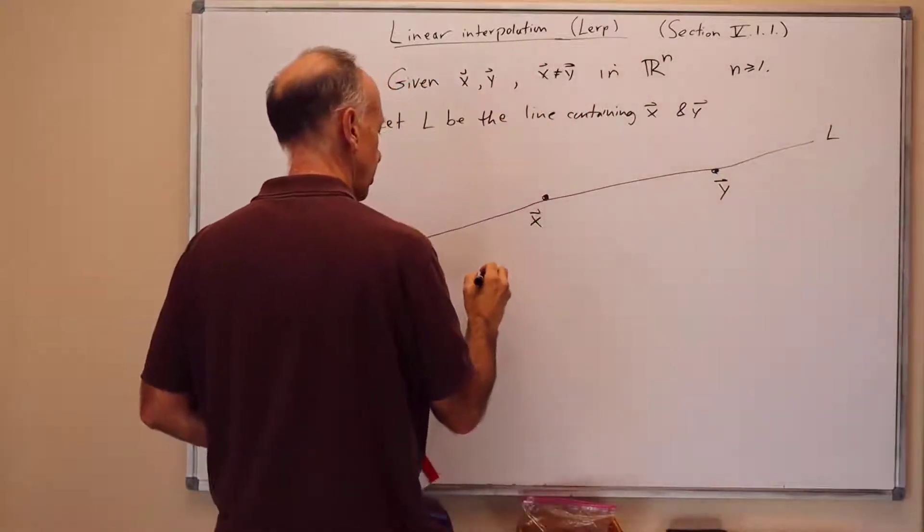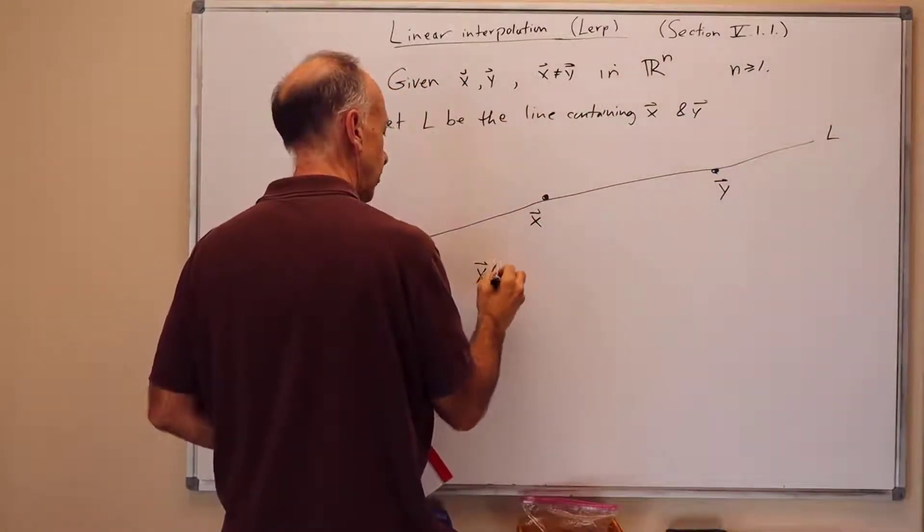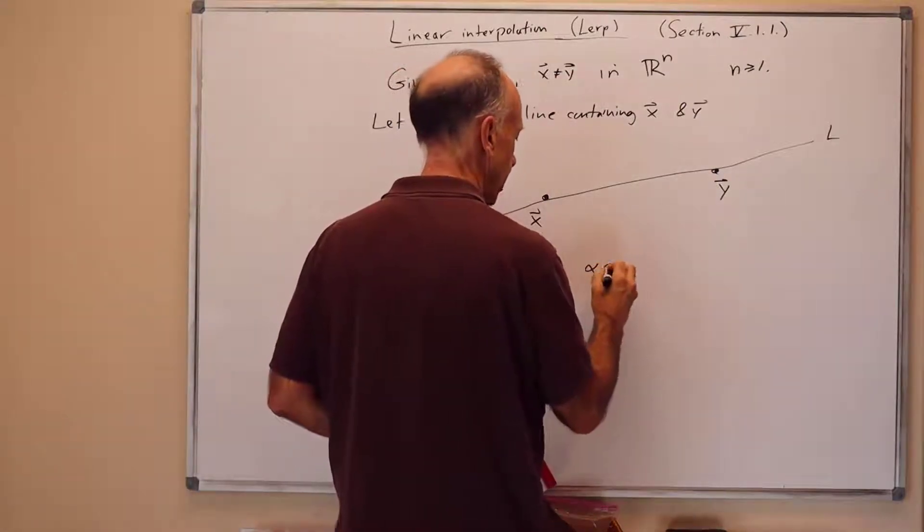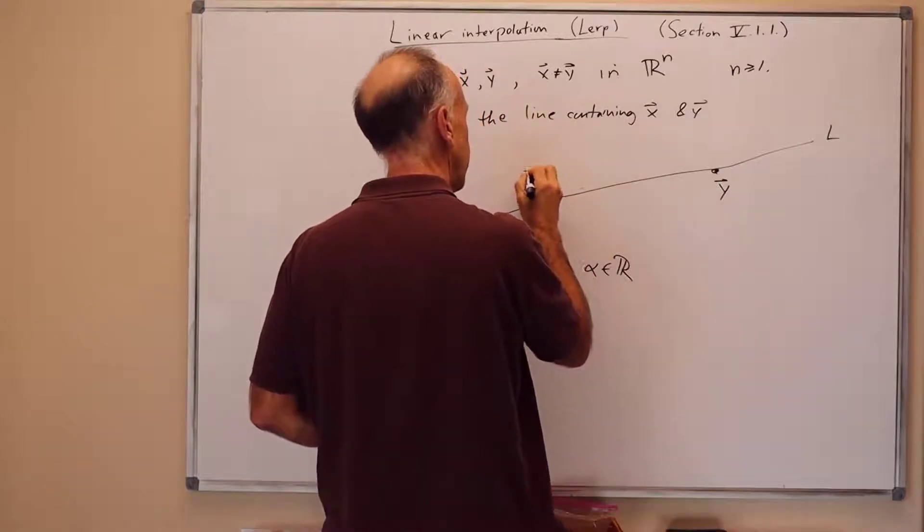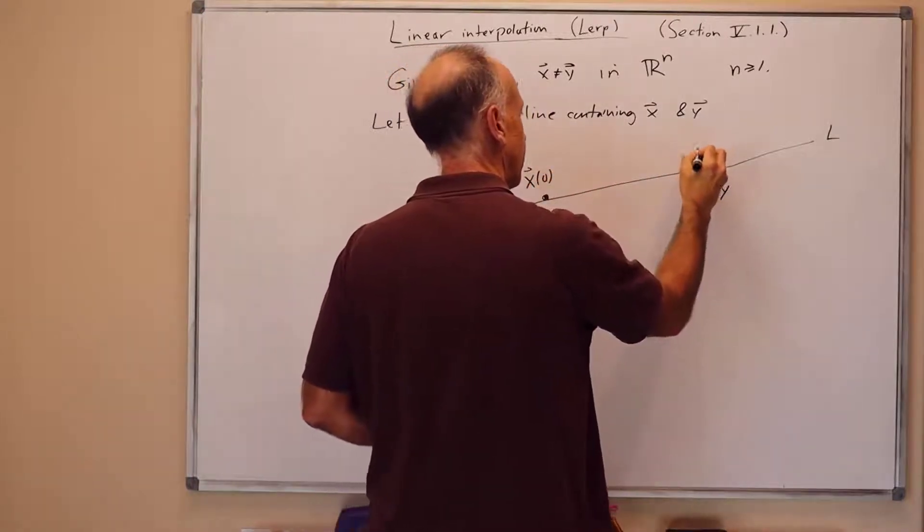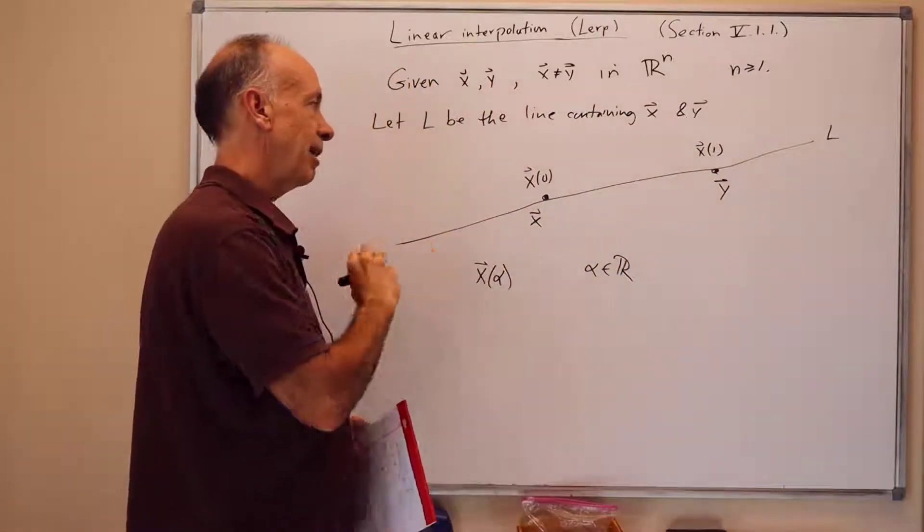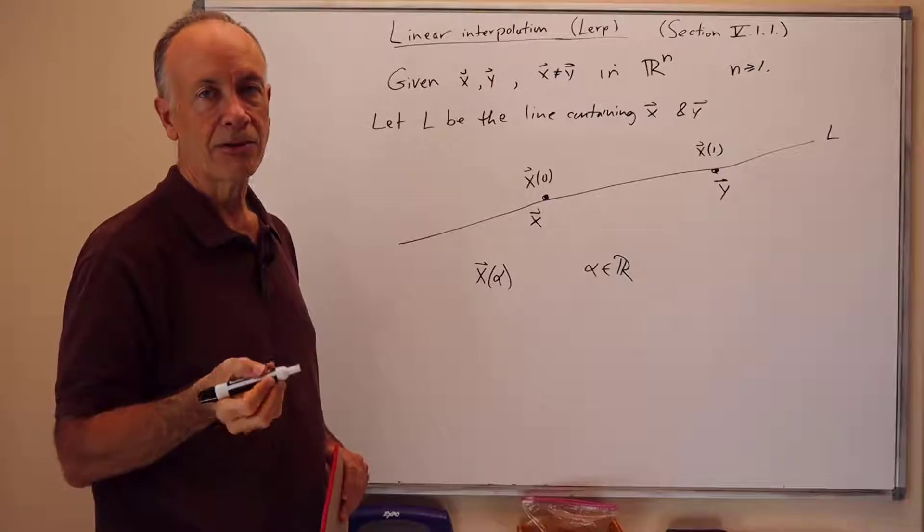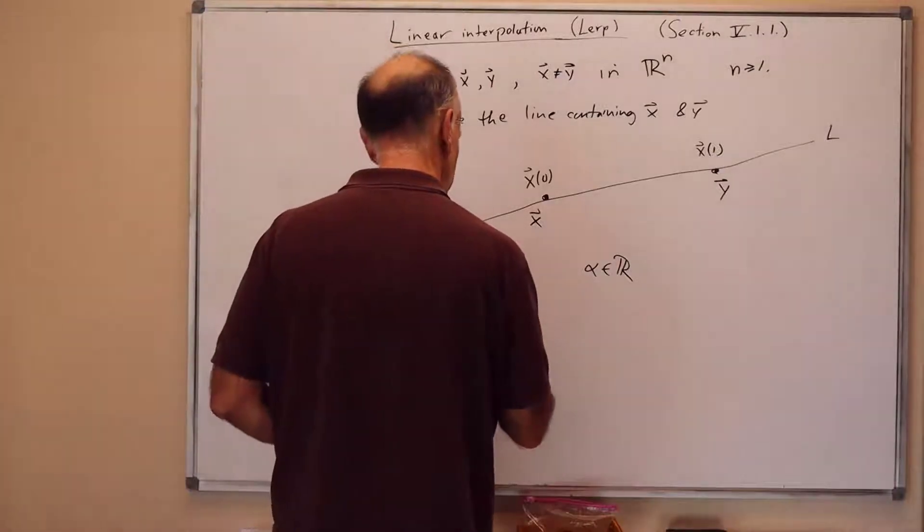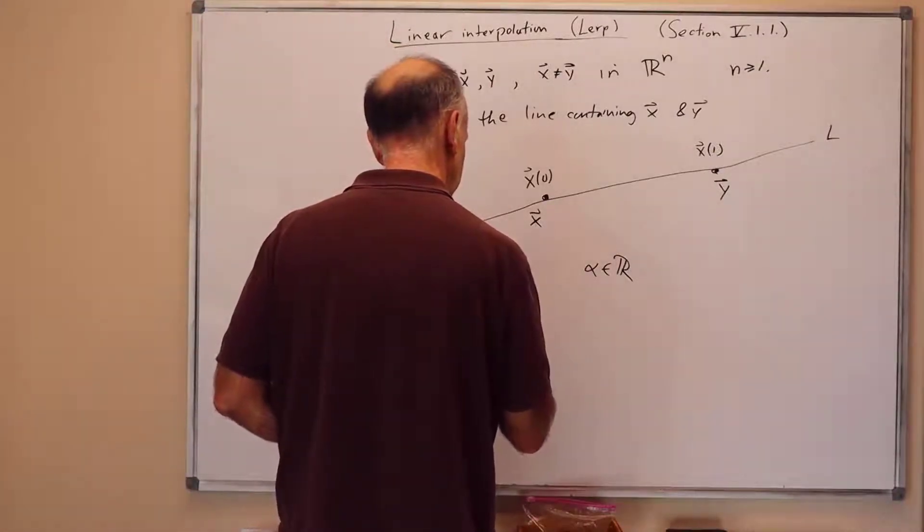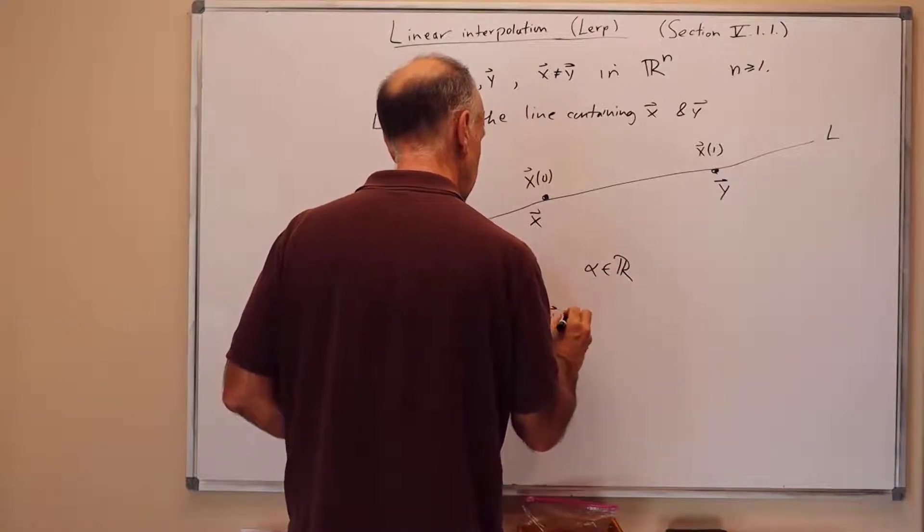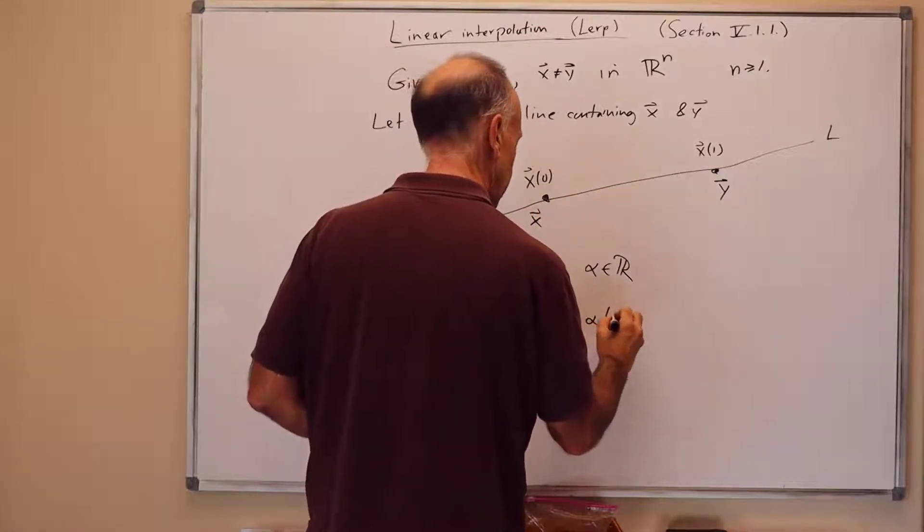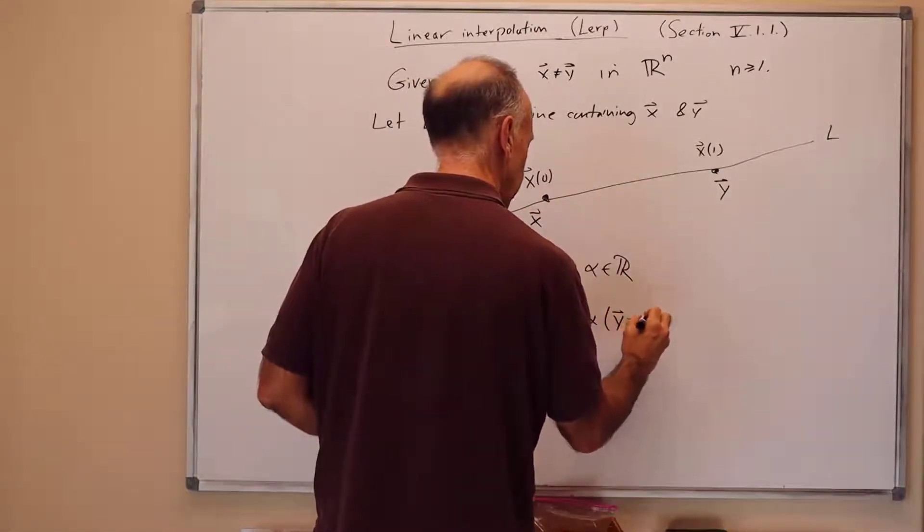And we want to define a function x of alpha with alpha ranging over the reals. Alpha is a scalar. And we want to have x of 0 equal to x, x of 1 equal to y. The formula for this is easy to derive. x of alpha is x plus alpha times y minus x.